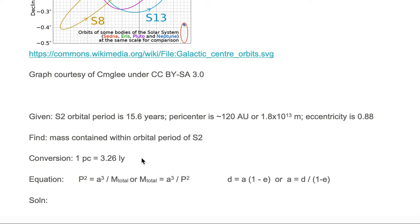Let's go to the equation of Newton's version of Kepler's third law. We want to solve for M total. In order to know M total, we need to know P squared and a cubed. Well, we know P, P is 15.6 years.